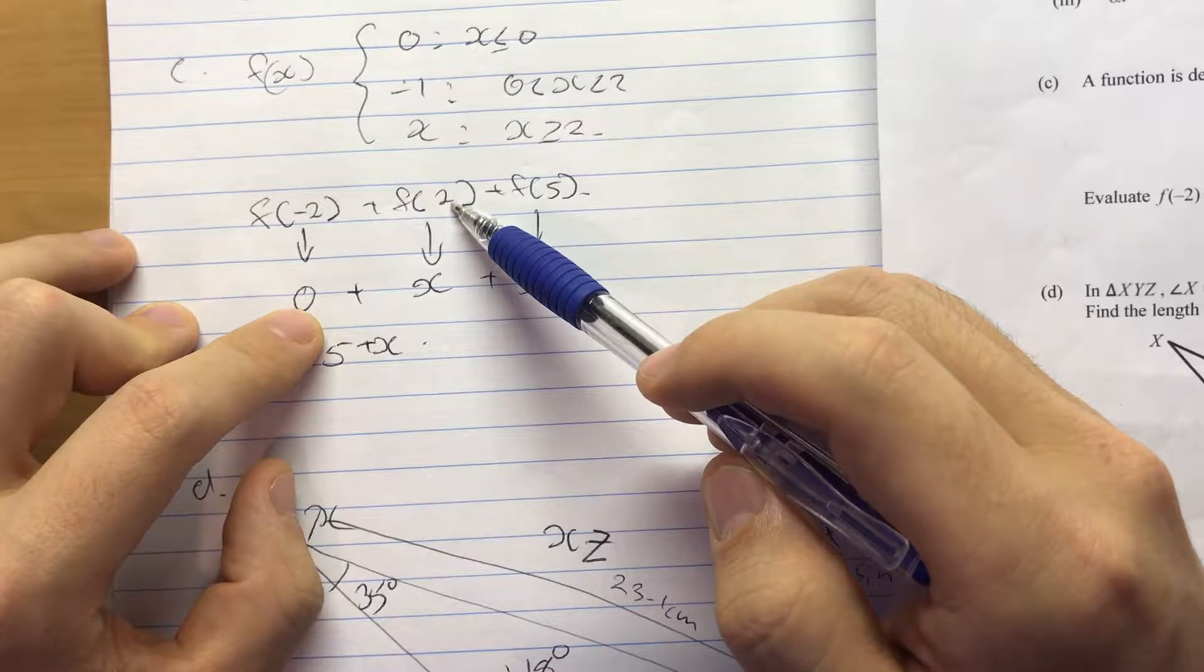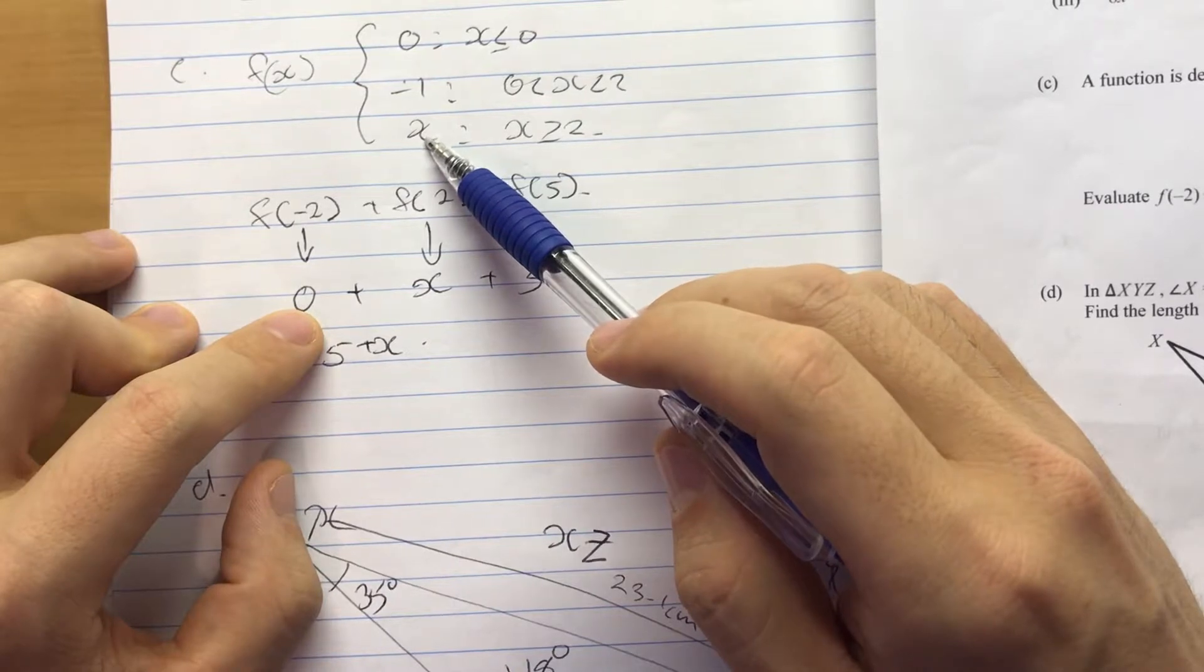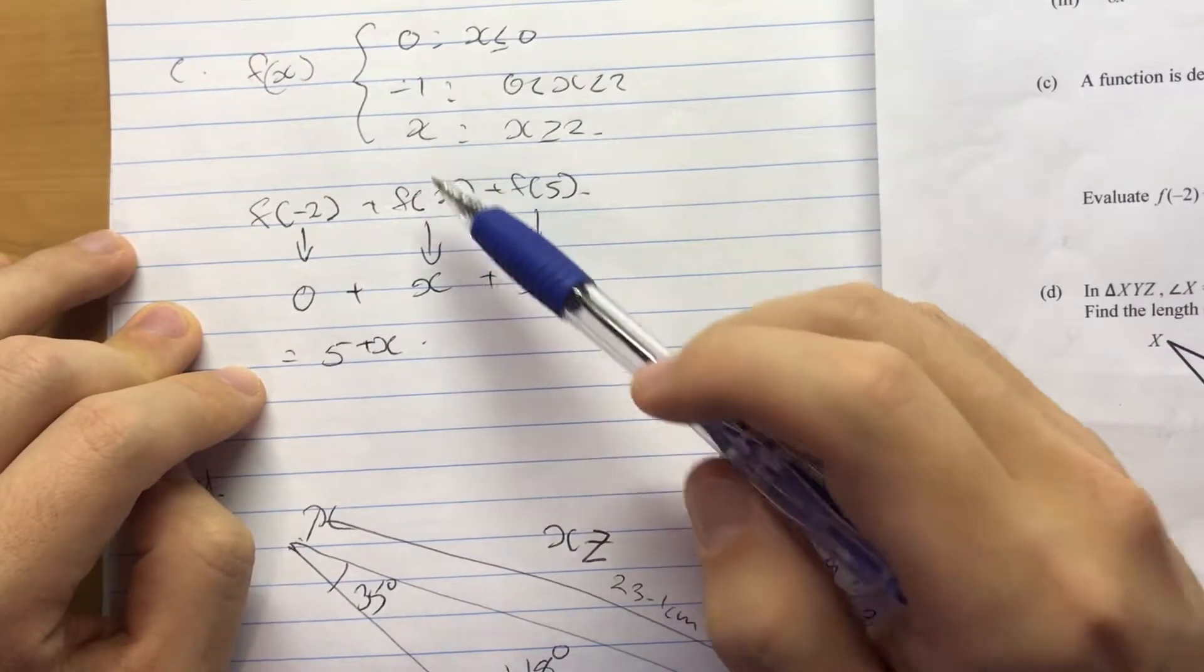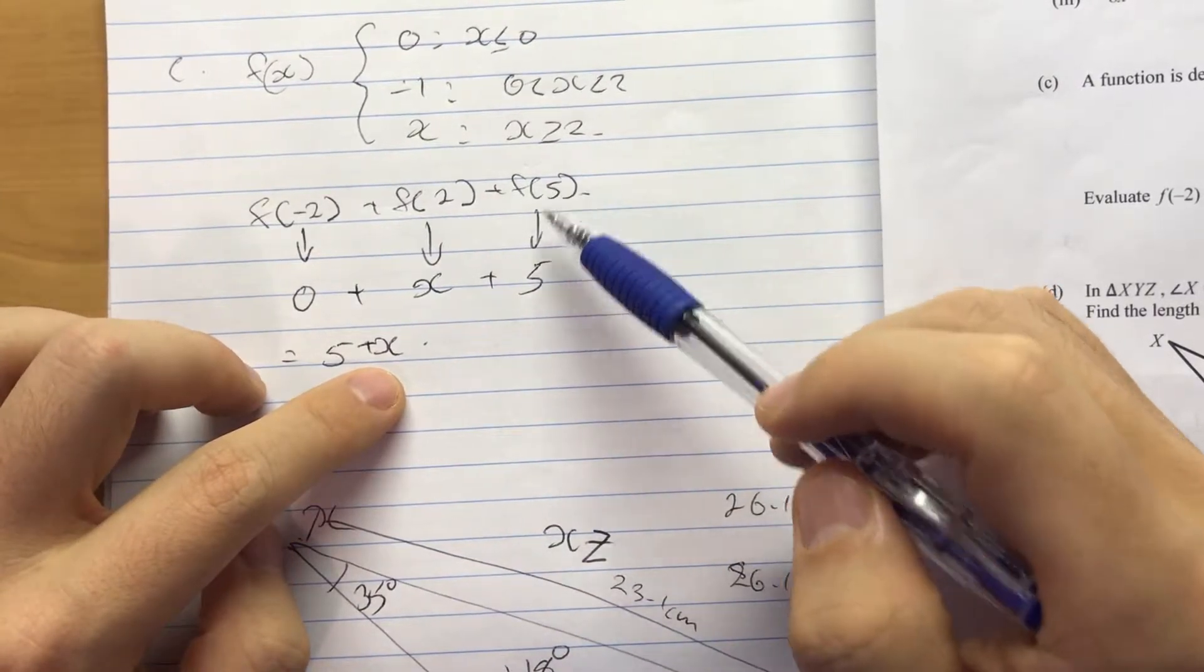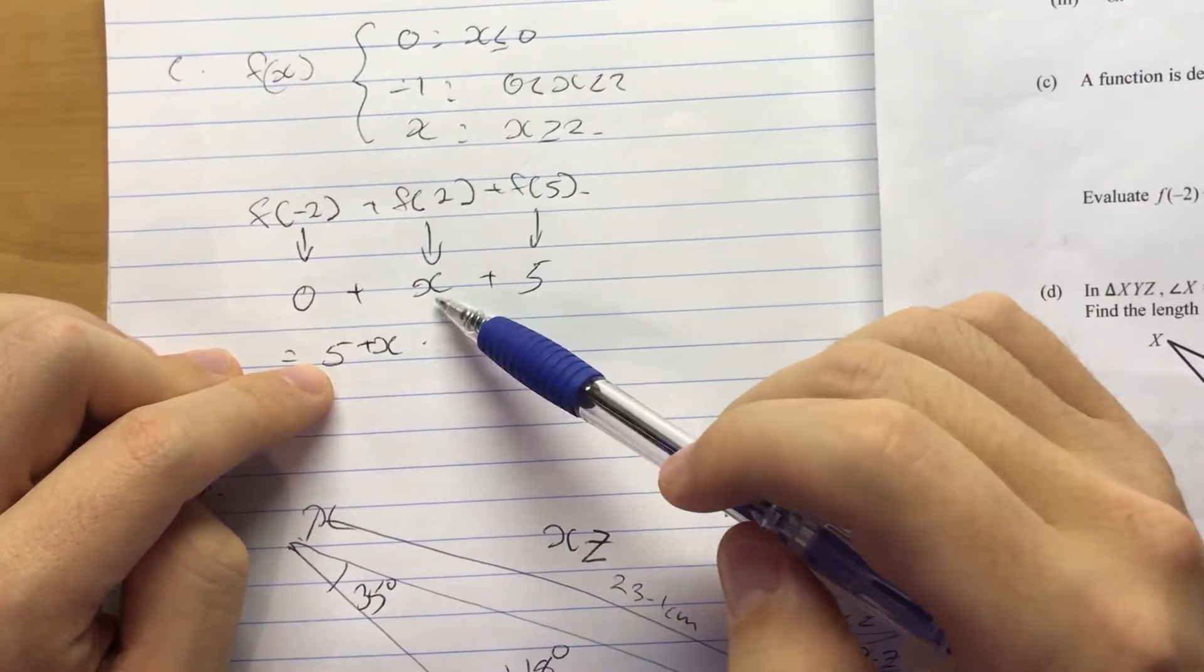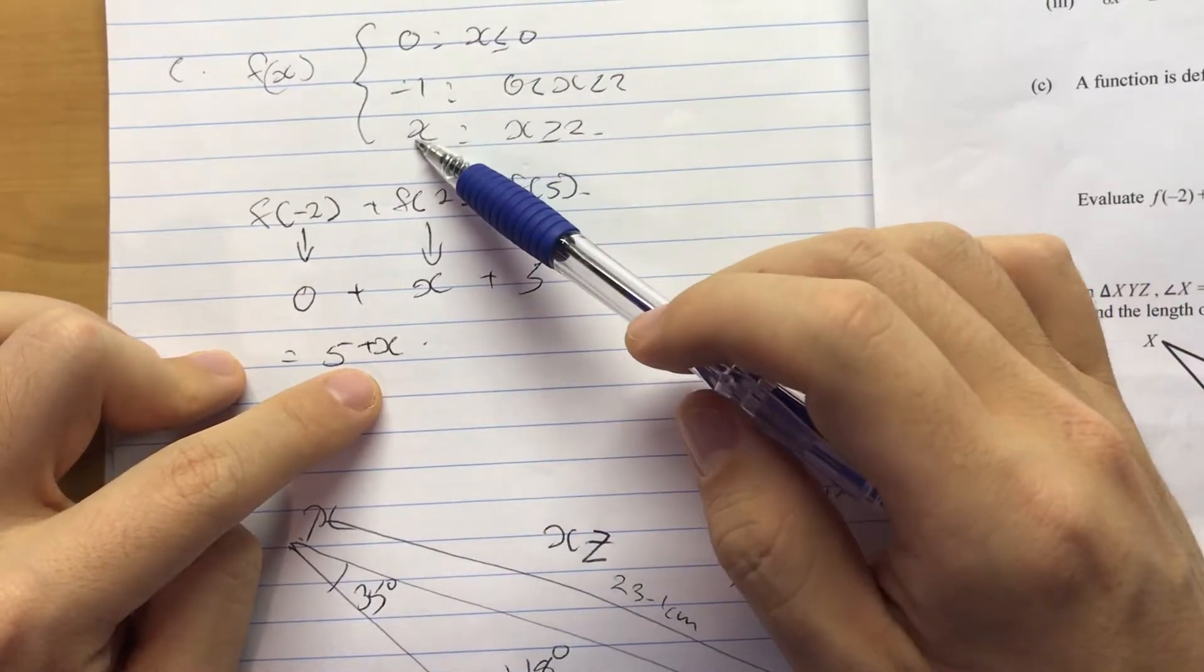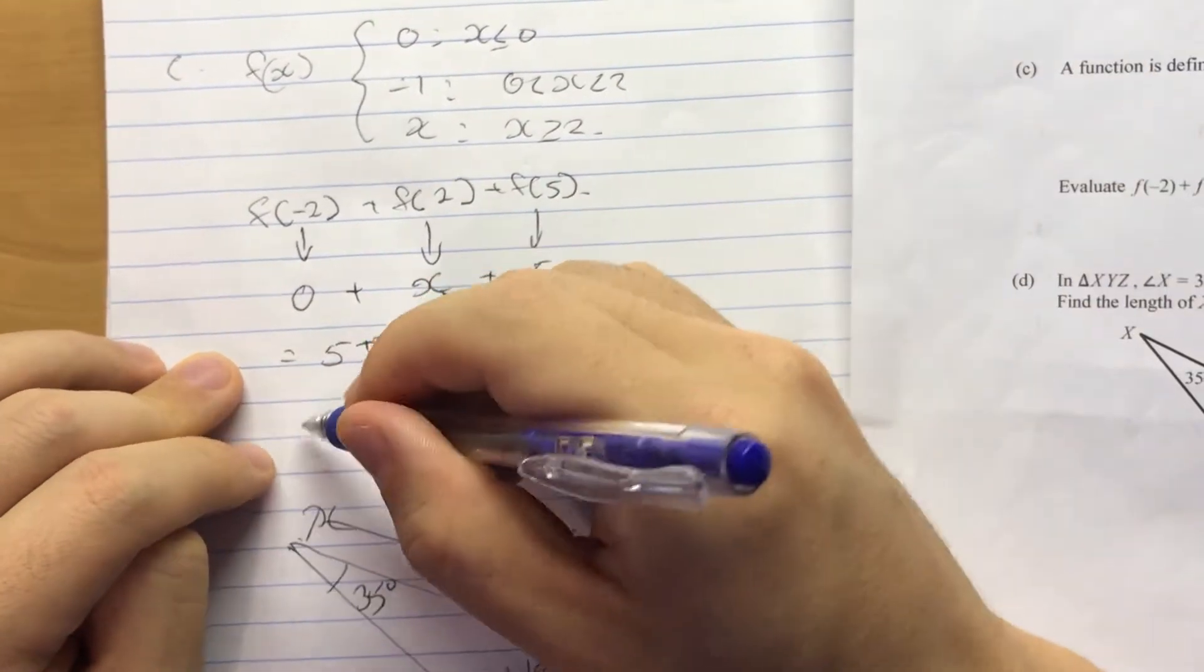So when it's 2 we're in this case. So x will just output the same thing. So 2 will output 2. Oh. Yes. Okay. So you just wrote x but x actually is equal to 2. Now for 5. That's very strange. It seems you knew what to do for 5 but for 2 you didn't do it. Yeah. So when it's greater than or equal to 2 it's x. So if you're going to put 5 you get 5 back. Okay. So this should actually be a 2. The answer should be 7.